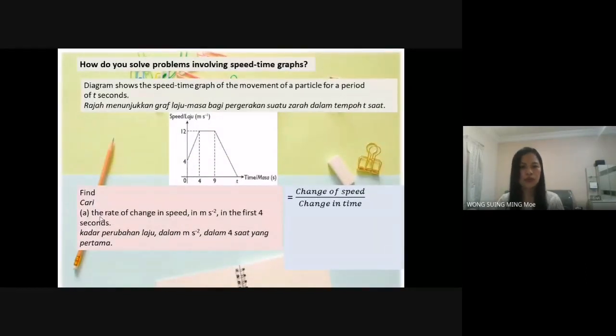When we want to find the rate of change of speed, we need to use the formula: change of speed over change in time.